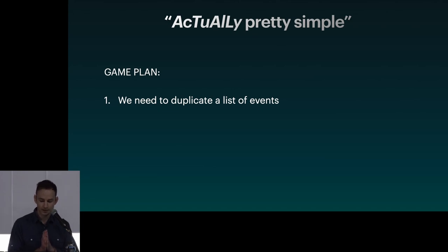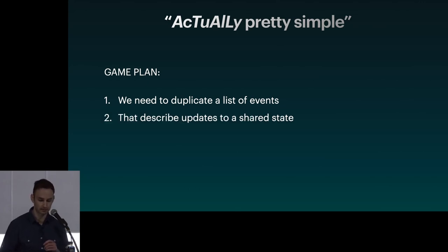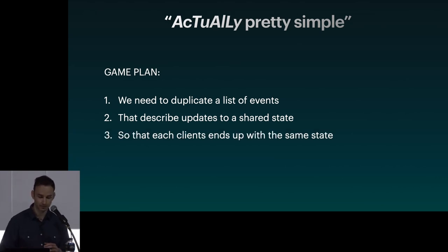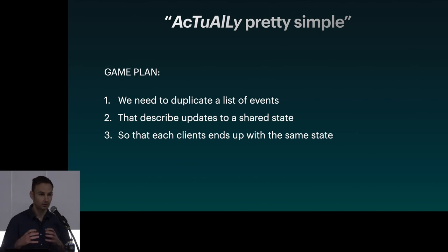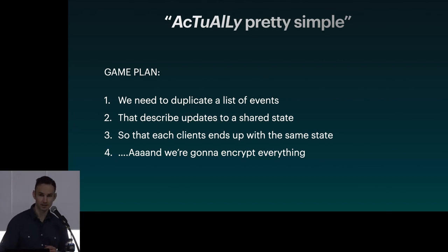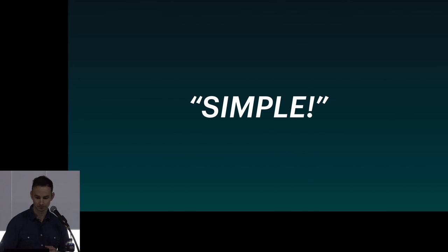Here's the game plan: we're going to reproduce the existing user experience that everyone is already used to today, but make it secure. We're going to do that by duplicating a list of events. This list of events describes updates to a shared state so that each client — each end-user device, each iPhone, iPad, laptop — arrives at the same exact state. And we're going to encrypt everything, encrypt this list of events. That's our plan. It's pretty simple.